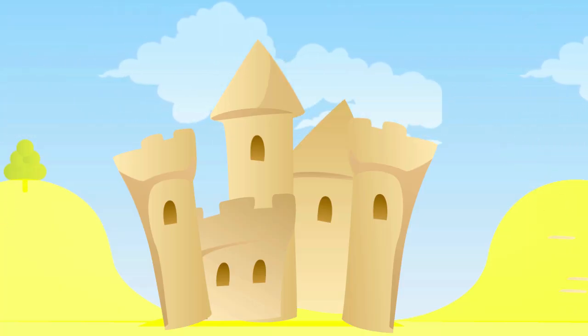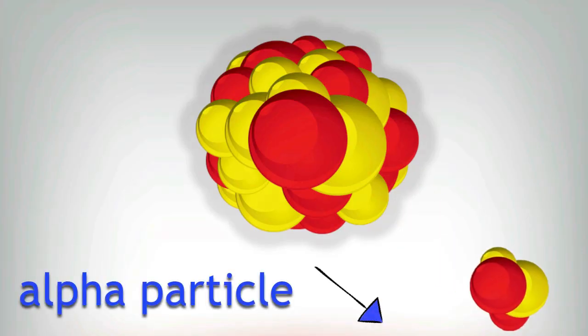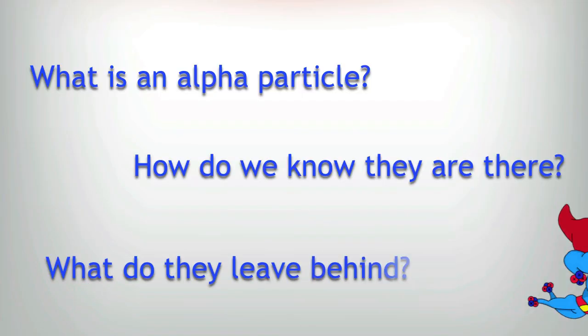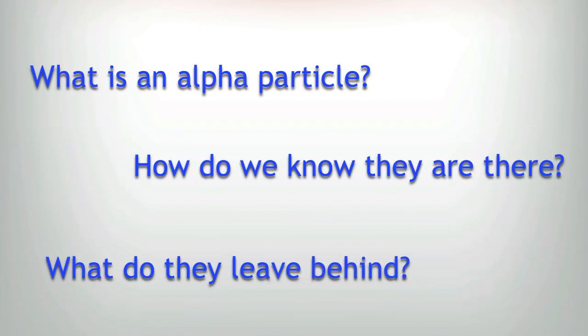That last bit of sand is a bit like an alpha particle. You put it in, and eventually bang, it comes shooting out. So what is an alpha particle? How do we know they're there? What do they leave behind in the nucleus? These are all questions that we're going to try and answer.